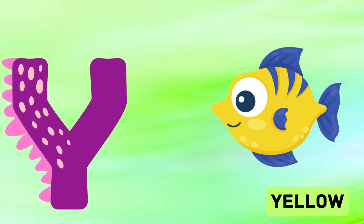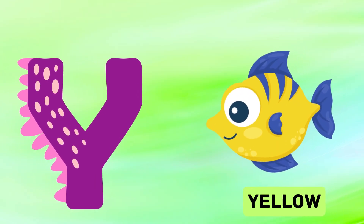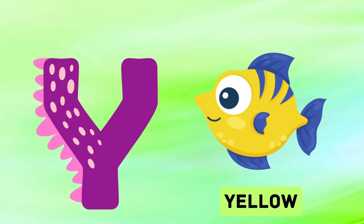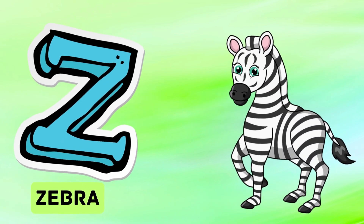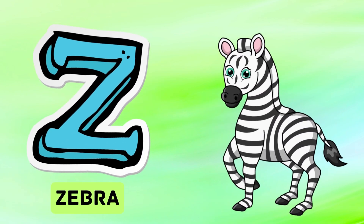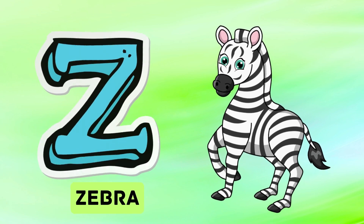Y is for yellow, ye-ye-yellow. Z is for zebra, z-z-zebra.